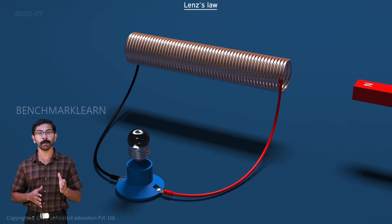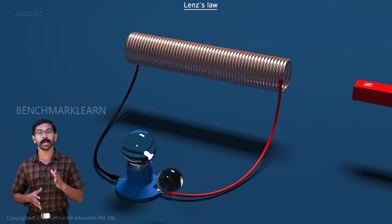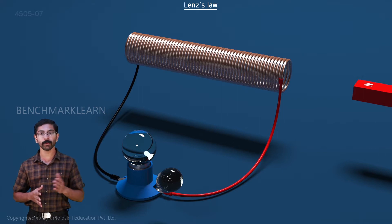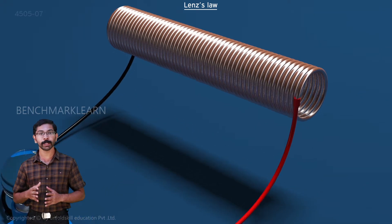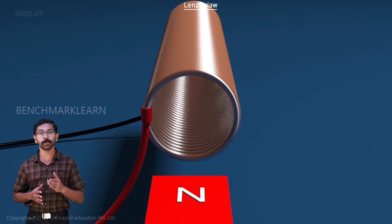We replace the light bulb with a new one of higher wattage and repeat the experiment. To light up the bulb, we need to move the magnet into the coil at the same velocity V. But this time, since the light bulb is of higher wattage, it requires more energy. So we have to do more work to move the magnet. How does this happen? As we try to move the magnet into the coil, we experience a greater force that tries to slow down the motion of the magnet.